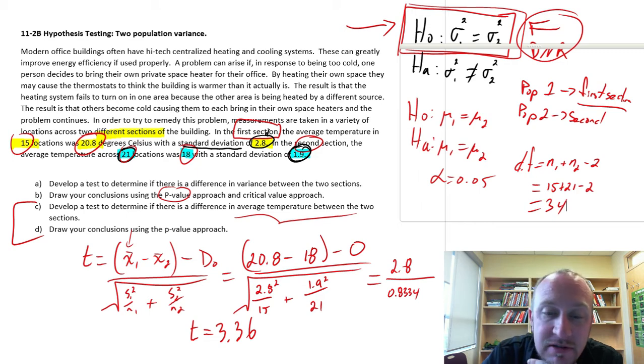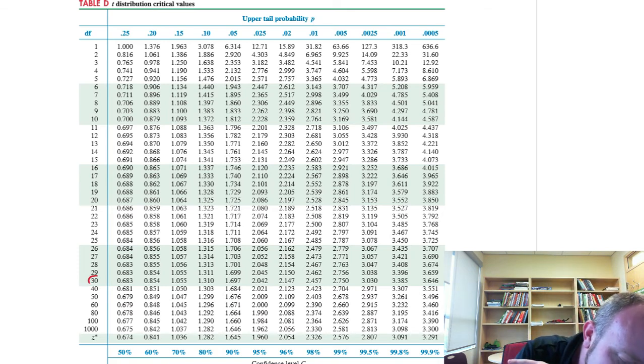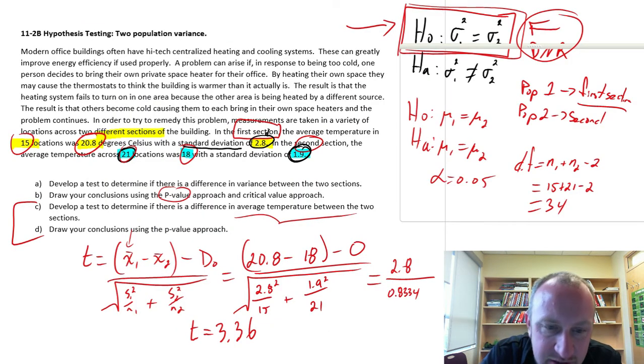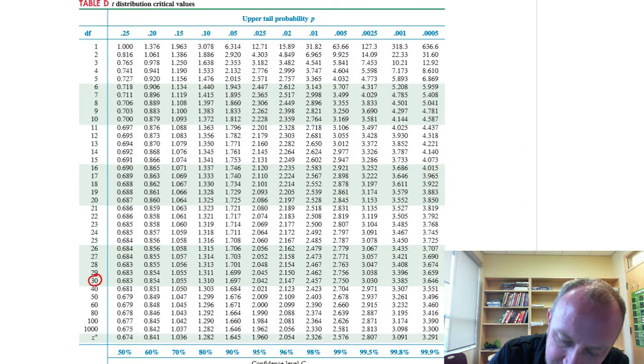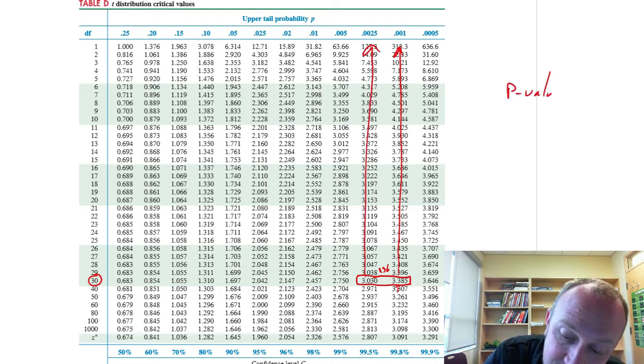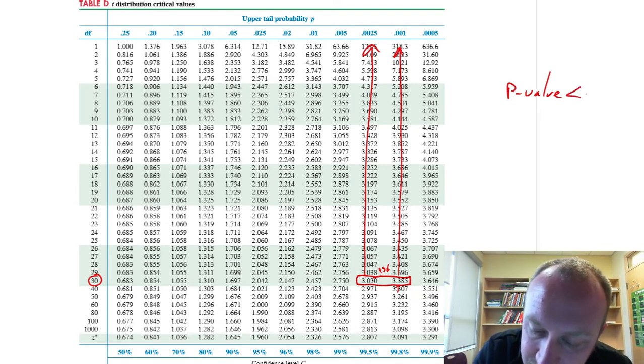Okay, so now we know which variant of the t distribution to use. We'll go to our t tables, 34 degrees of freedom, well we have to approximate it anyway so we'll use 30 degrees of freedom. Let's just use our p-value approach. So our test statistic here was 3.36. 3.36 is out here somewhere between these two values, fairly close to this one but we're just not quite there. So 3.36 is in here, so our probabilities of interest are here.